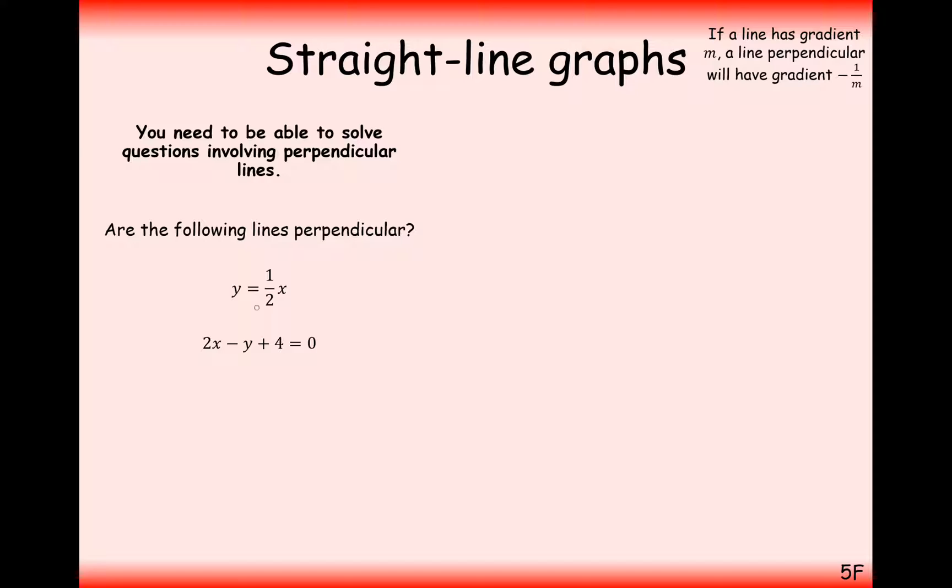Are these lines perpendicular? So the first line, that's pretty easy. That's going to have a gradient of a half. We'll need to do a little bit of rearranging for the second one, though. And this gives us a gradient of two. Will these two gradients multiply to make minus one? No, they'll multiply to make one.